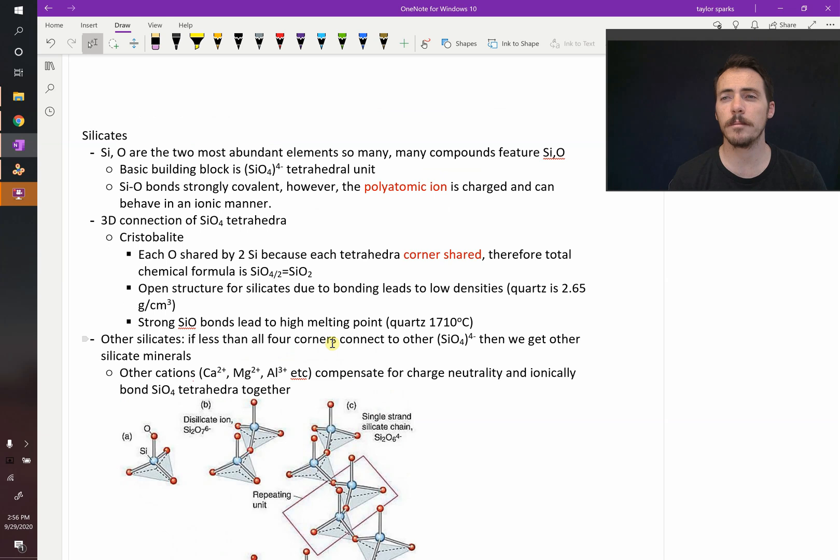The basic building block to all of these silicate compounds is the SiO4 four minus tetrahedral unit. So the silica is in the center of a tetrahedra of four oxygens all around it. That has a charge of four minus. Silicon oxygen bonds are highly covalent, so these are strong bonds, but because this is a polyatomic ion, so this group of atoms has a charge to it, it behaves sometimes in an ionic manner.